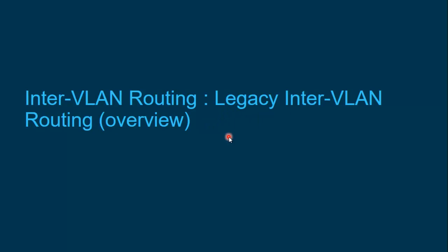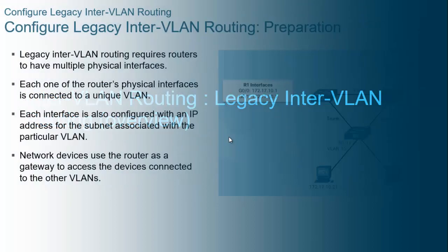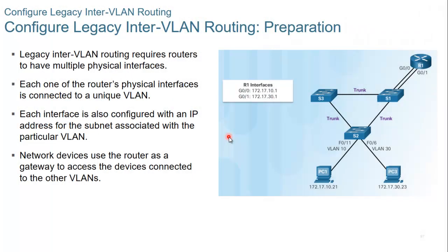Although legacy inter-VLAN routing is not used anymore, as network administrators you need to have knowledge of it. Legacy inter-VLAN routing requires routers to have multiple physical interfaces. Each one of the router's physical interfaces is connected to a unique VLAN. In this case, with two different VLANs, we need two different interfaces on the router. Each interface is also configured with an IP address from the subnet associated with a particular VLAN. Network devices use the router as a gateway to access the devices connected to the VLANs.